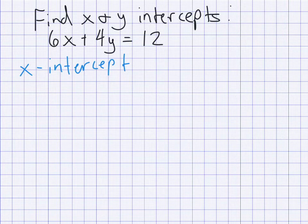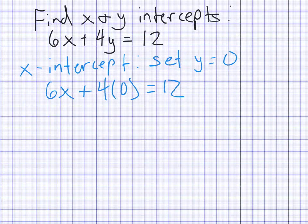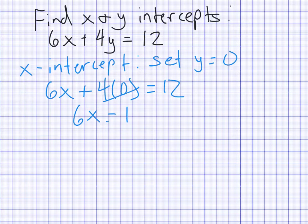Similarly, to find the x-intercept, your y coordinate must be zero because you haven't gone up or down, so you set y equal to zero and solve for x. In this example we want to find the x and y-intercepts for 6x plus 4y equals 12. Starting with the x-intercept, we set y equal to zero, giving us 6x plus 4 times 0 equals 12. Since 4 times 0 is 0, that piece goes away and we have 6x equals 12. Dividing both sides by 6, we get x equals 2.